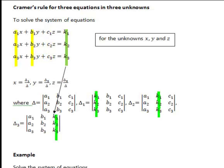Finally similar pattern for delta3 which helps calculate the third unknown z. The constants now go into the third column of delta3 and the coefficients a1, a2, a3, b1, b2, b3 go into the first and second columns of delta3. So let's apply this to a particular example.